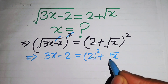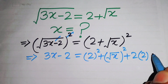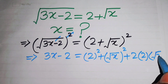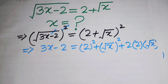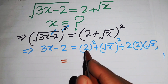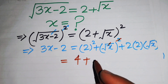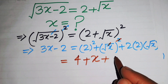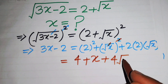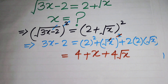Now we simplify. We open 2 squared, which equals 4. The square and square root cancel, giving us plus x. We multiply 2 times 2 to get plus 4 times the square root of x. So the right-hand side becomes 4 plus x plus 4 times the square root of x.